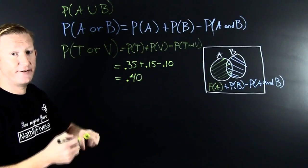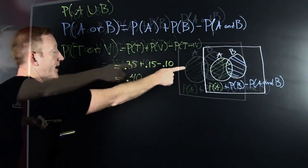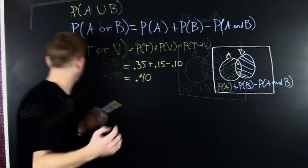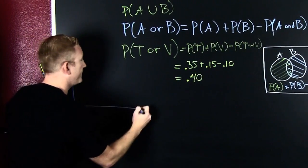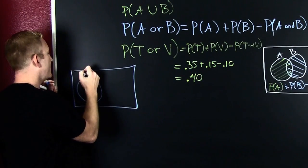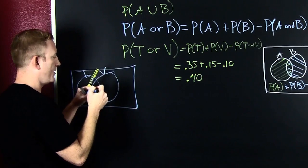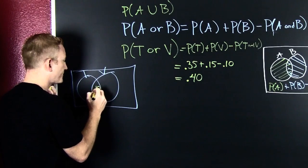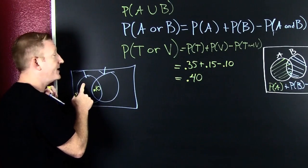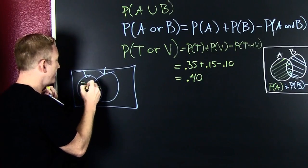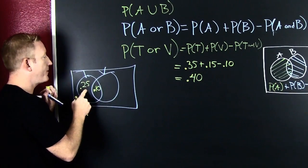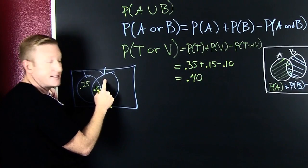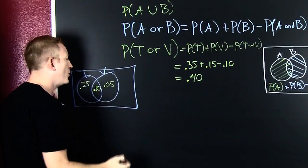Let's look at this from a different angle — the Venn diagram with the numbers in it. This is tickets, this is vandalism. Since the probability of both occurring is 10% and the probability of a ticket is 35%, that means this region — ticket and not vandalism — is 25%. Then the probability of vandalism and not ticket is 0.05.